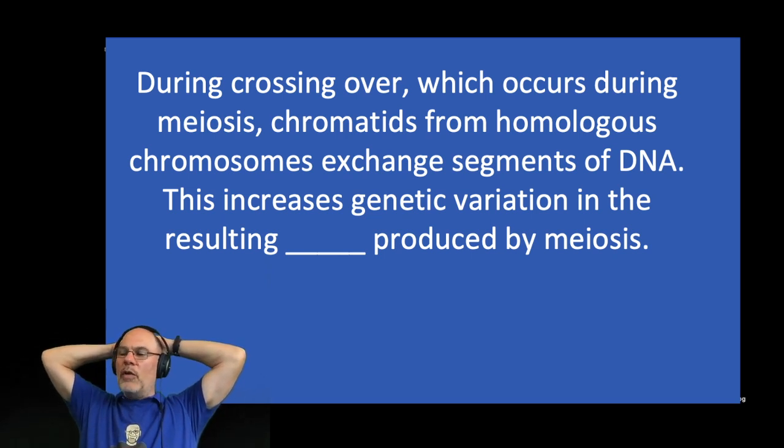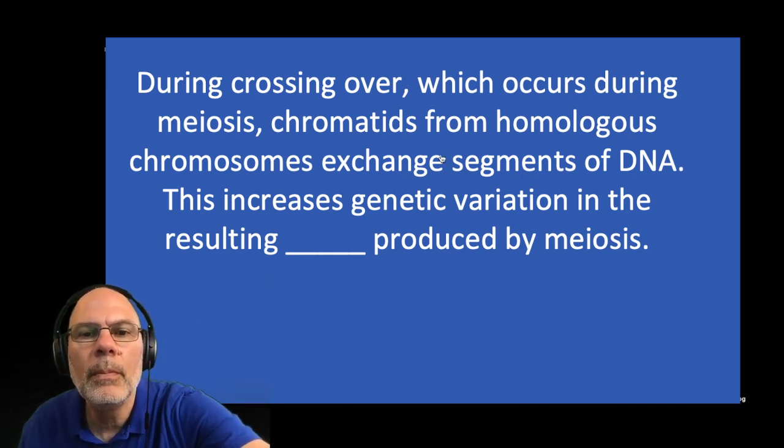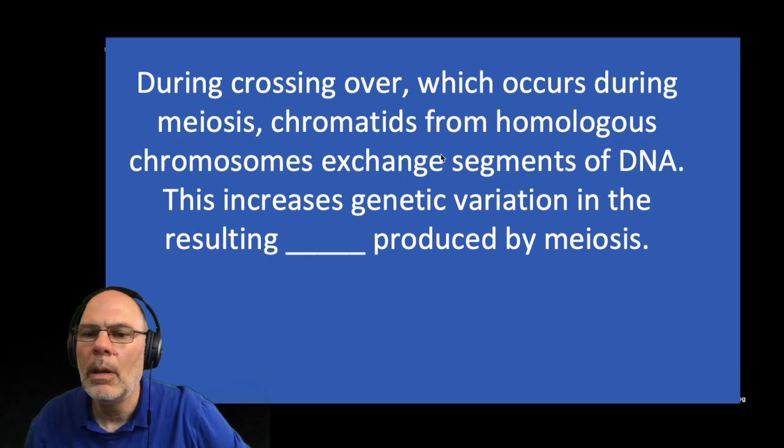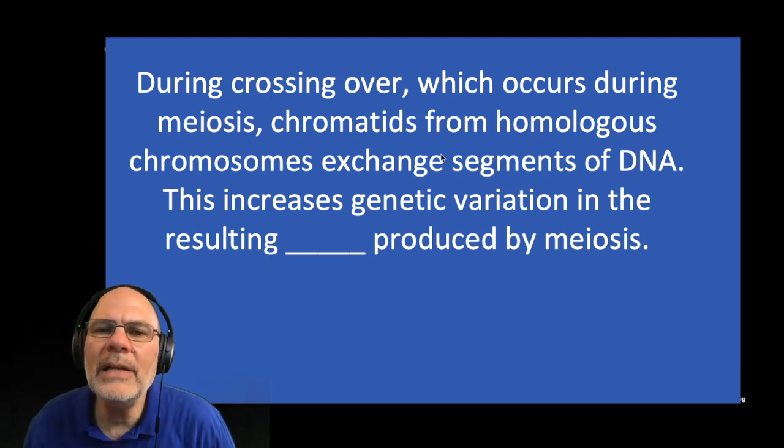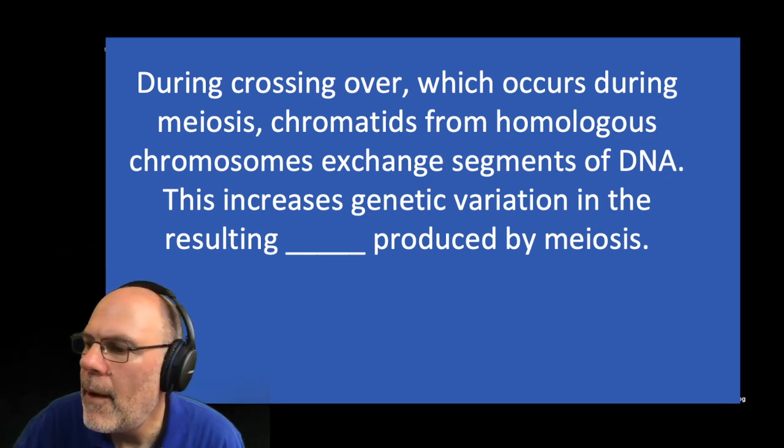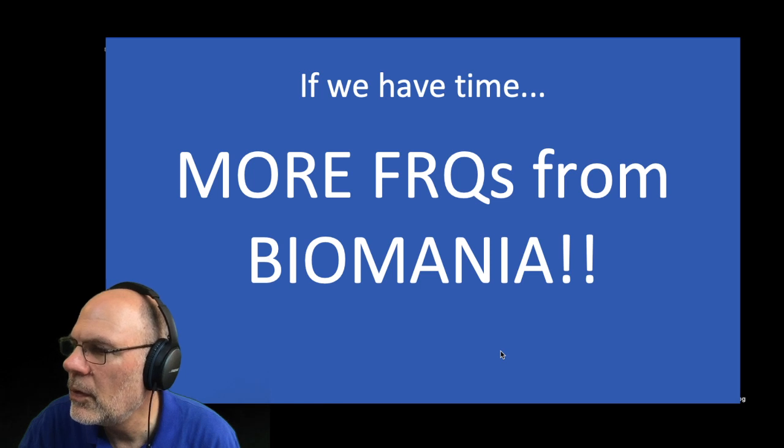I think you can answer this in a couple of ways. During crossing over, which occurs during meiosis, chromatids from homologous chromosomes exchange segments of DNA. This increases genetic variation in the resulting blank produced by meiosis. So what gets produced by meiosis? What gets produced by meiosis? Fantastic. Gametes. All right.